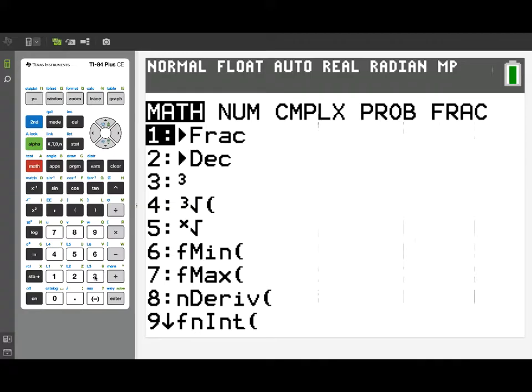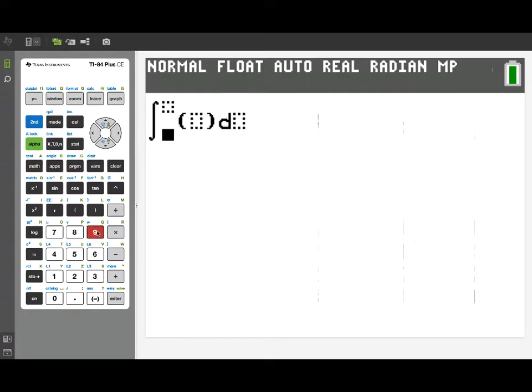Now one of the questions in this problem asks for how many pounds of bananas were removed in the first two hours. So to find that, we're going to integrate the removal rate, which is y1, from 0 to 2.